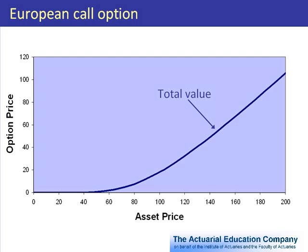Now let's look at this graphically. This graph shows the value of a European call option, with the option price or value as a function of the underlying asset price. This option happens to be a one year option with a strike price of 100. The dotted line shows the intrinsic value: for asset prices below 100, the value of the asset is less than the strike price, and therefore there is no intrinsic value.